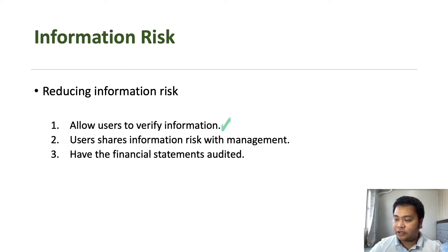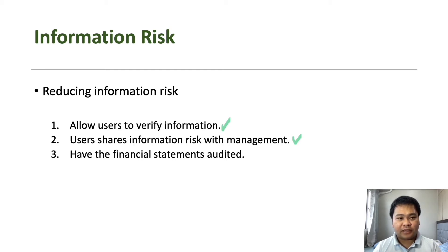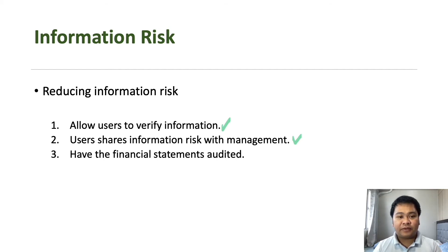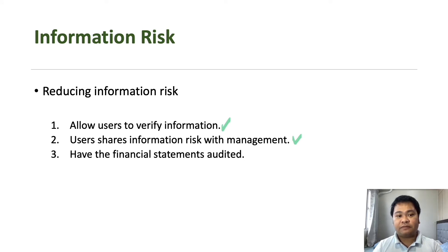Another approach is for users to share information risk with management. For example, if users suffer financial loss due to incorrect information, they can file a lawsuit against management. This gives management less incentive to report incorrect information, knowing they could be held liable and obligated to pay damages to users of financial statements.